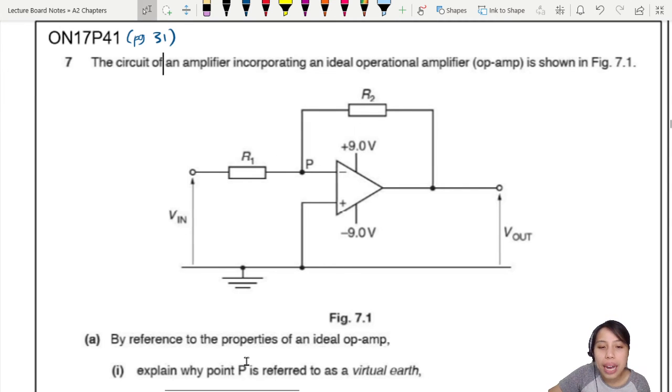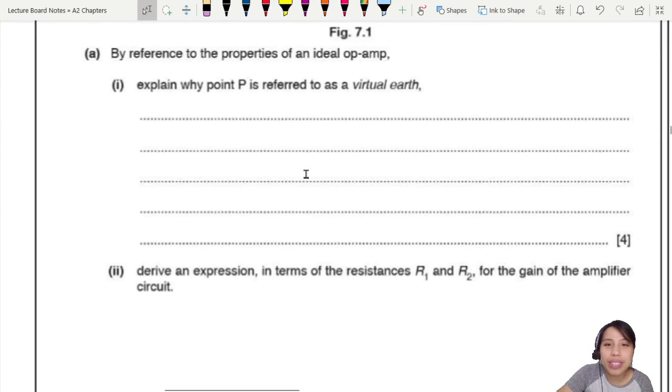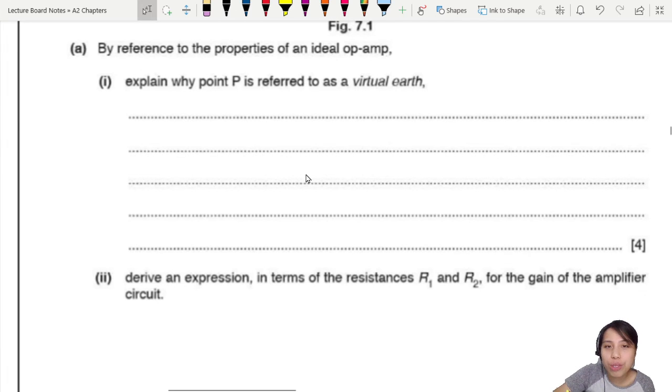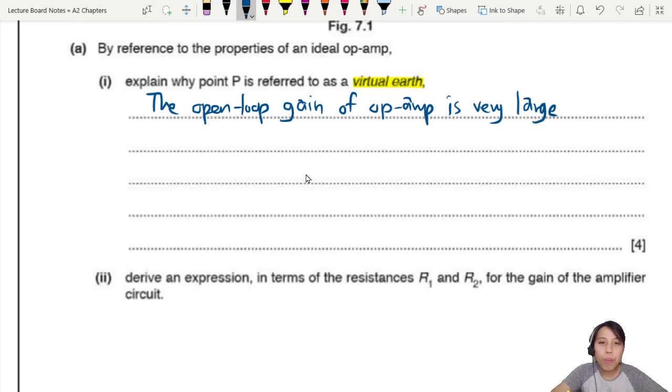By reference to properties of an ideal op-amp, explain why point P is virtual earth. What is virtual earth? Zero volt. So at this point, I'm going to go really fast because we just talked about it a few minutes ago. Four marks for this - you must go and memorize what is virtual earth if you don't know. The first point is that the open loop gain of the op-amp is very large or you could say infinity. Now that's a problem. We don't like that because we can't really control the output - straight away infinity. Any difference between V plus and V minus.